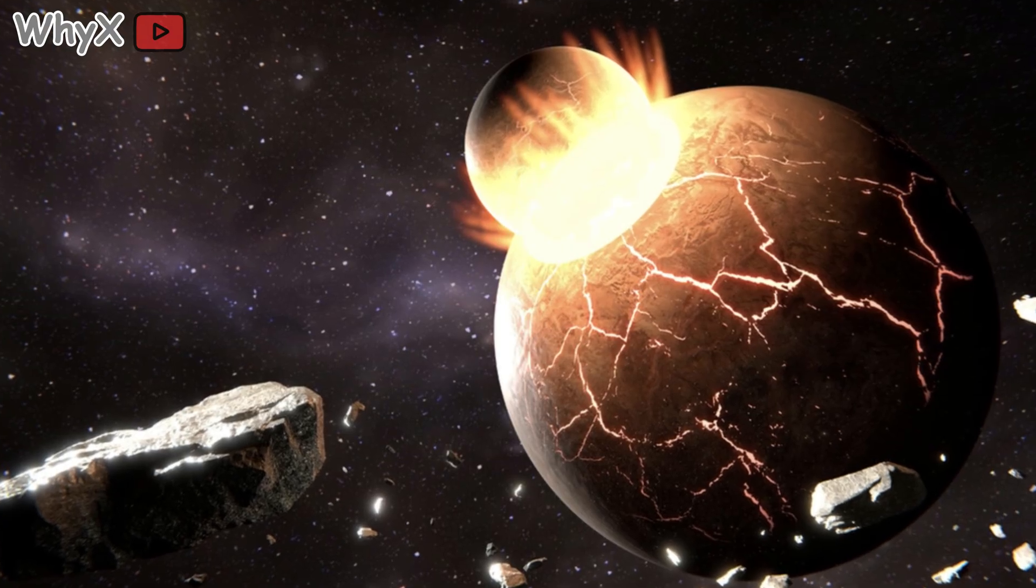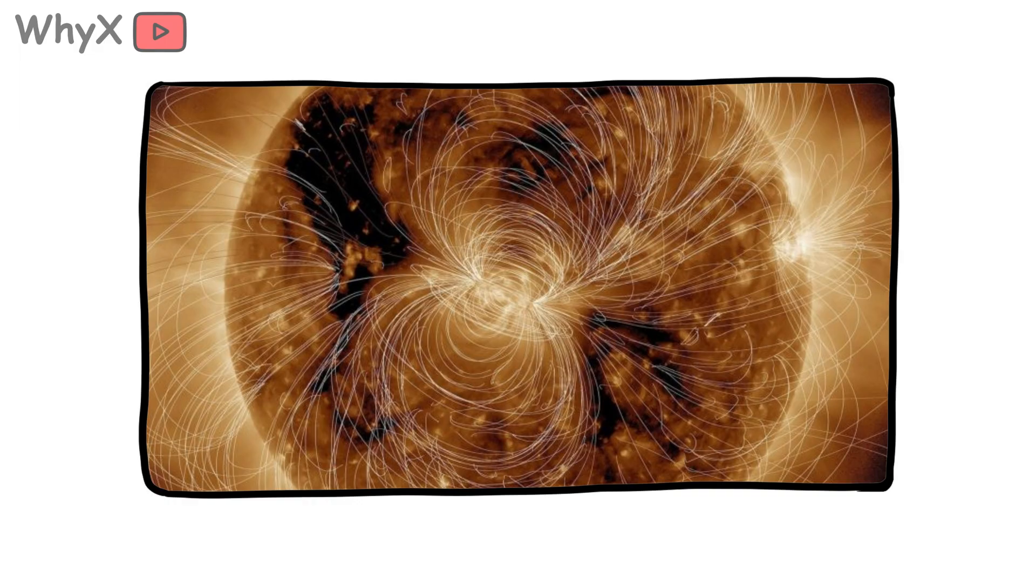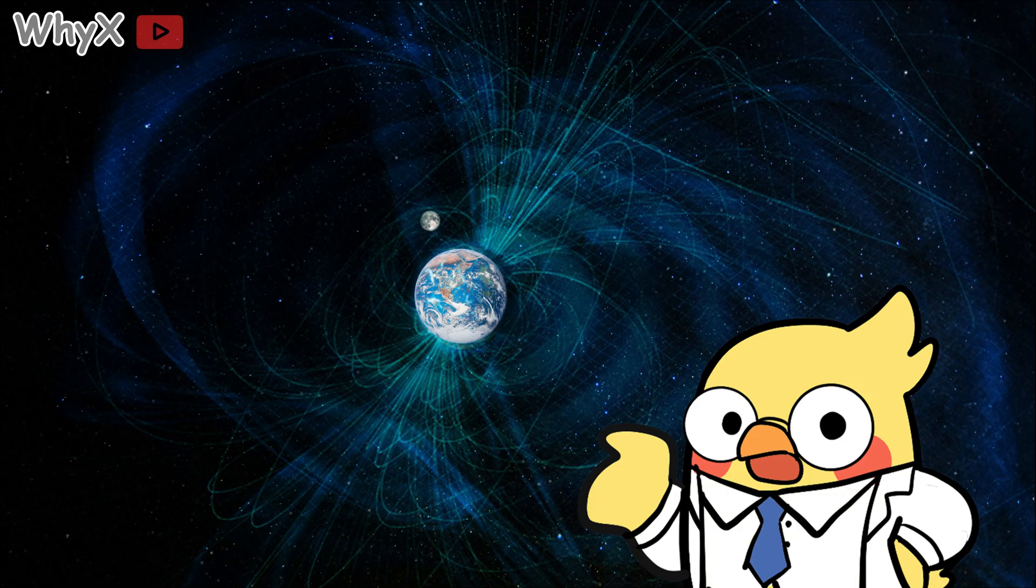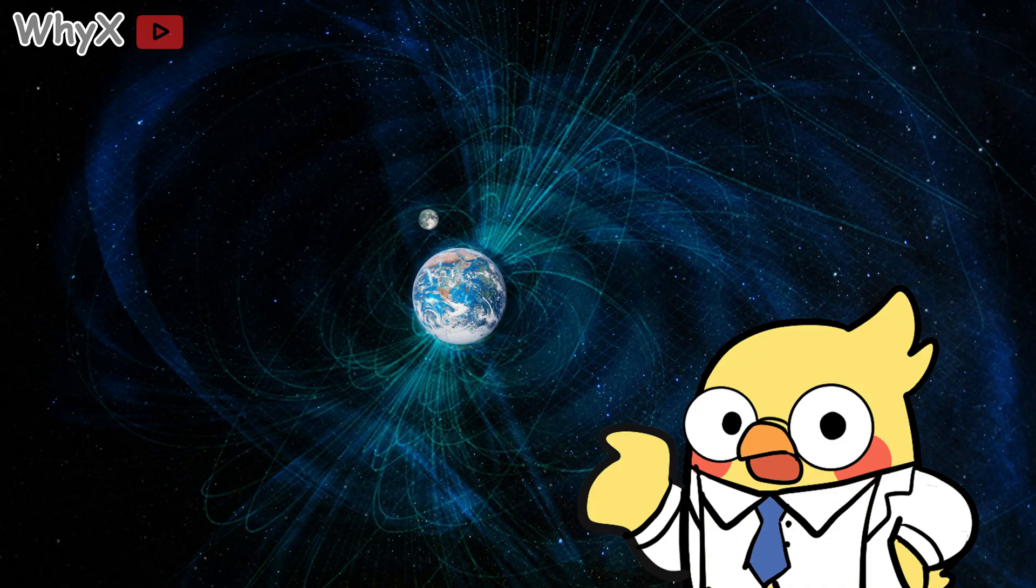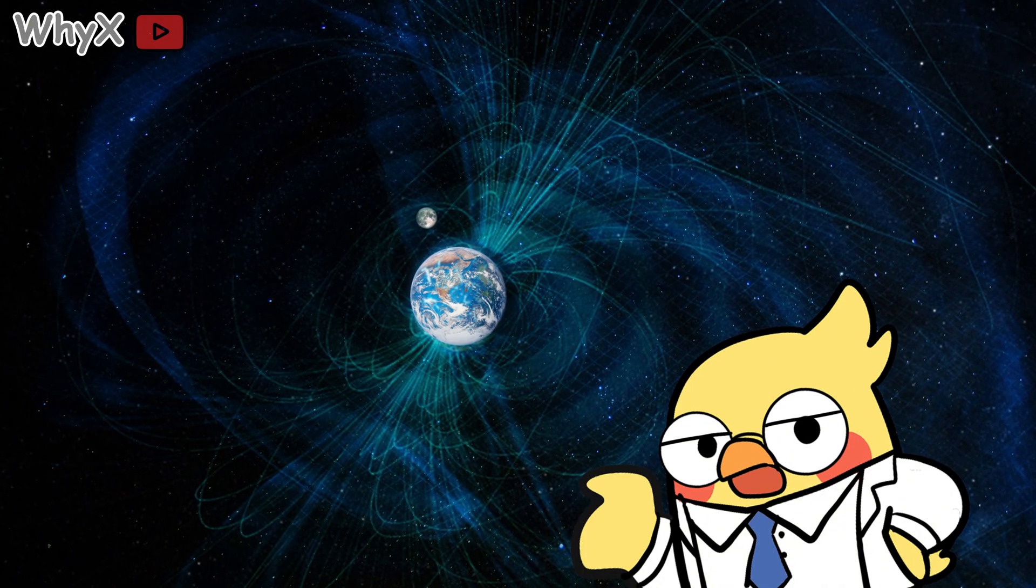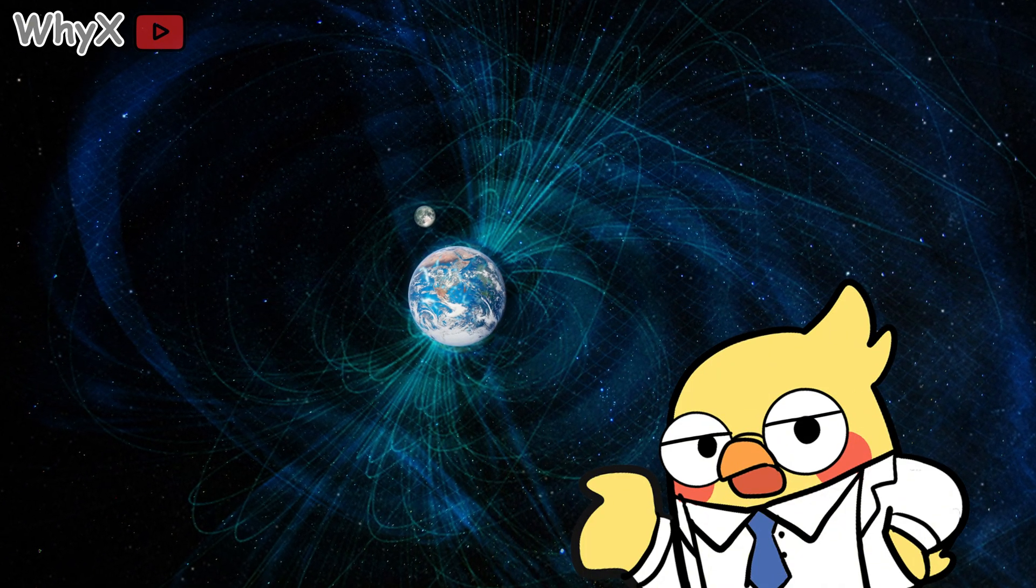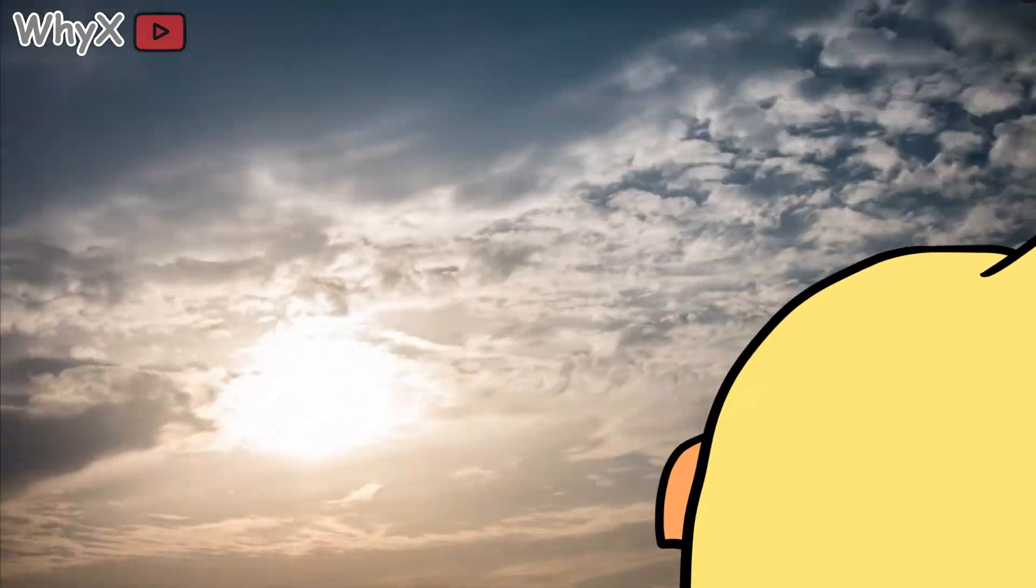The impact also does something alchemical to Earth's insides. It stirs the mantle, helps segregate the heavy core, and may set the stage for the magnetic field that would later act like a planetary sunblock. A magnetic field won't stop photons—nothing stops light—but it will shepherd charged solar particles away from the upper atmosphere, keeping our sky thick and our water mostly at home.